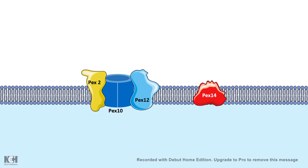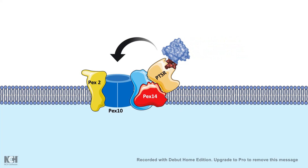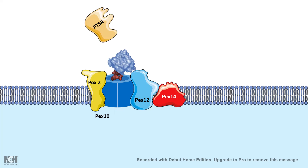The PTSR (Pex5) takes the protein to the PEX translocon complex, which is made up of four components: Pex2, Pex10 (the main translocon channel), Pex12, and Pex14. Pex5 binds to Pex14 along with the protein to be translocated. This Pex14–Pex5–protein complex then mobilizes to the translocon channel. The protein with its PTS sequence enters through the Pex10 translocon channel, while Pex5 dissociates and is recycled for another round of protein targeting.